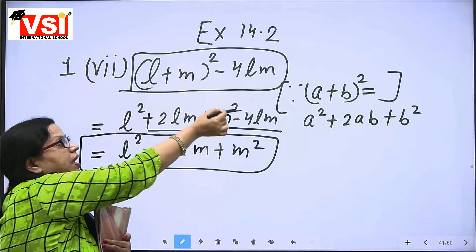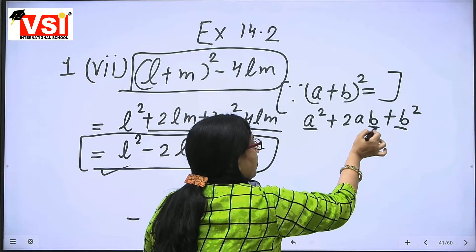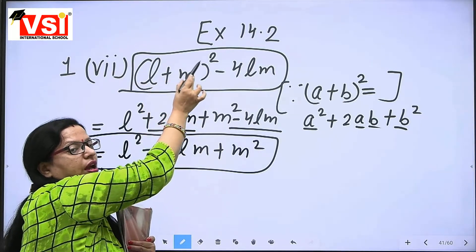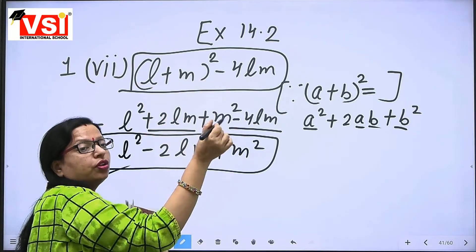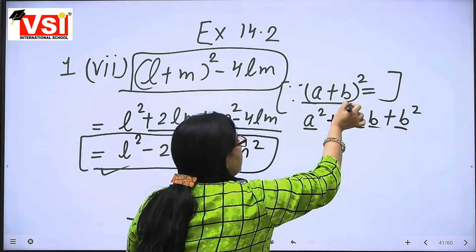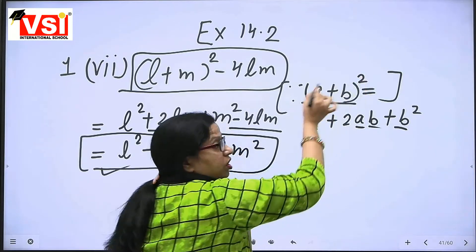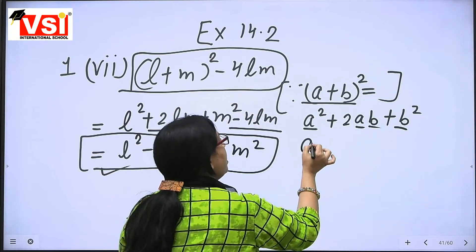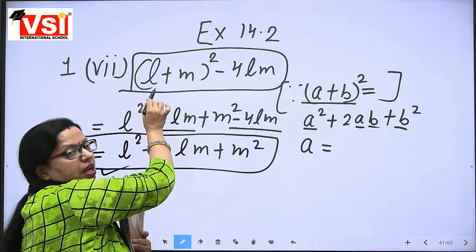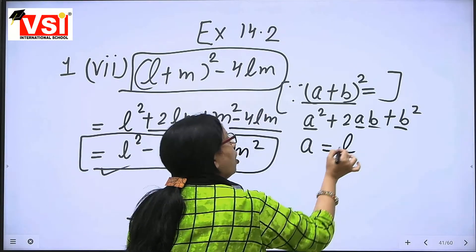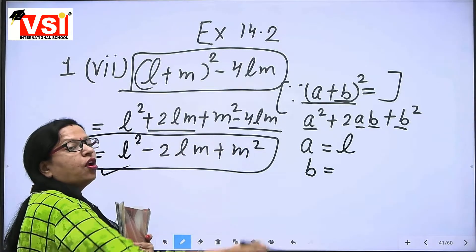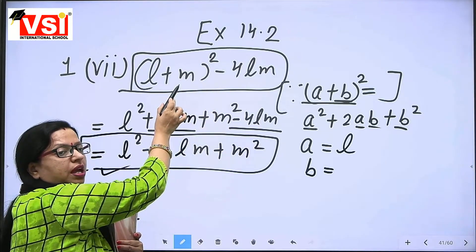A and B — these A and B here — we need to replace them. Replace them with L and M. Why? Because according to the identity A plus B whole square, the A value in the sum is L, and the B value according to the sum is M.